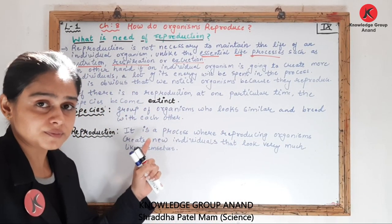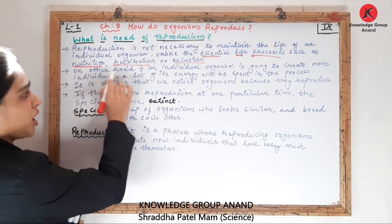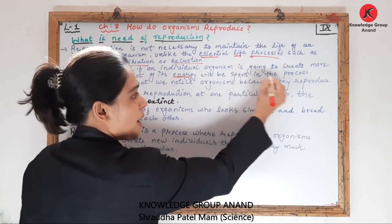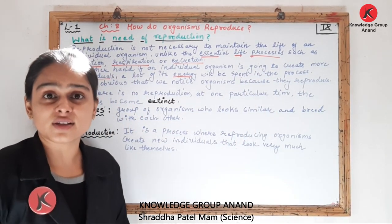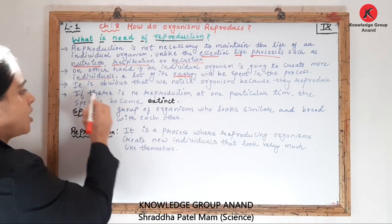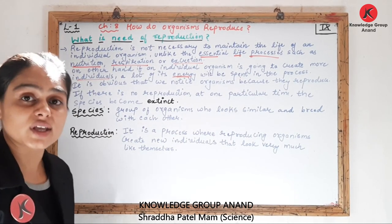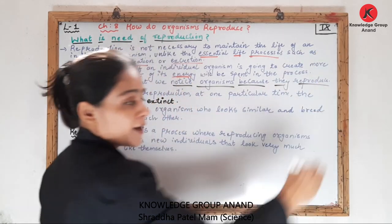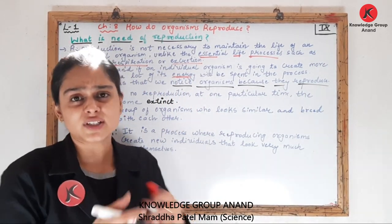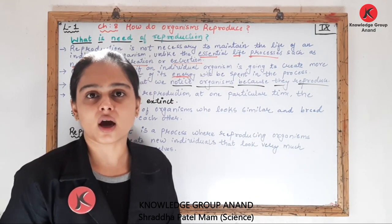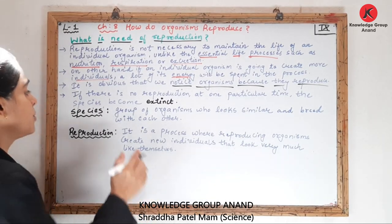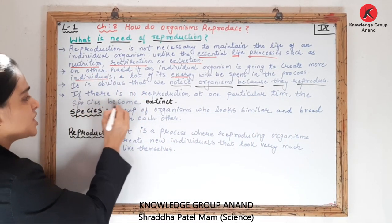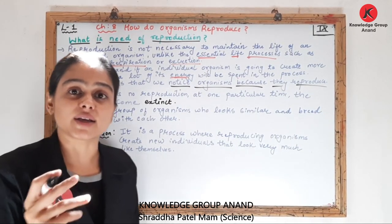So, if an individual organism creates more individuals, a lot of its energy will be spent in the process. Why should we waste this energy? The obvious answer is: we notice organisms because they reproduce. We see different varieties of species around us. If there is no reproduction, at one particular time, the species becomes extinct.